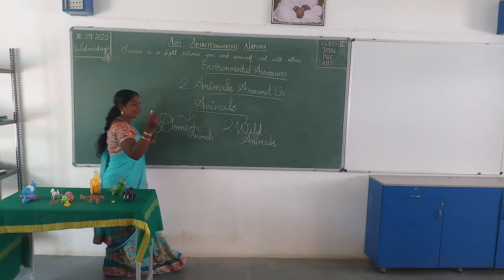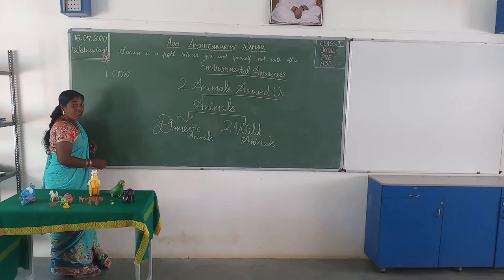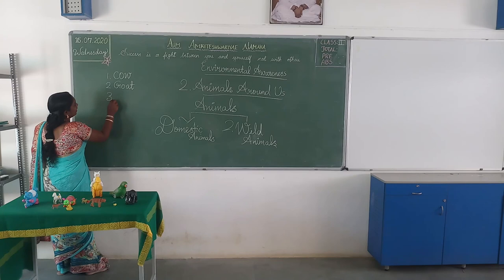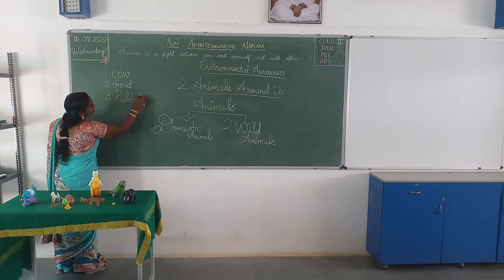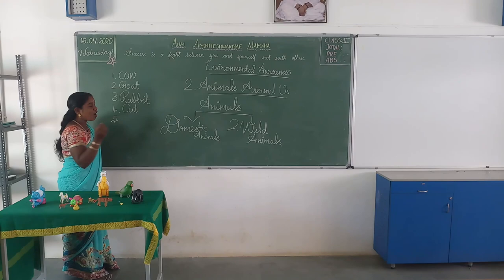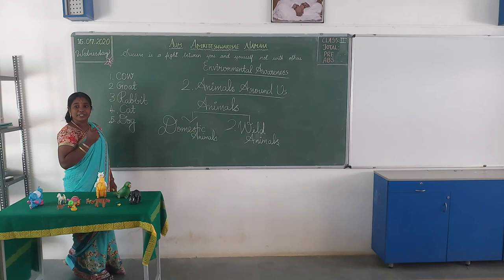C-O-W, cow. G-O-A-T, goat. R-A-B-B-I-T, rabbit. C-A-T, cat. D-O-G, dog. These are animals we can see near the house, like chicken and duck as well.